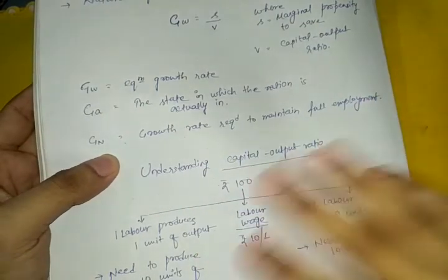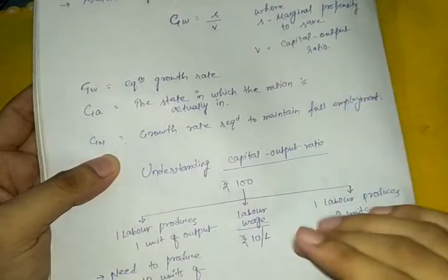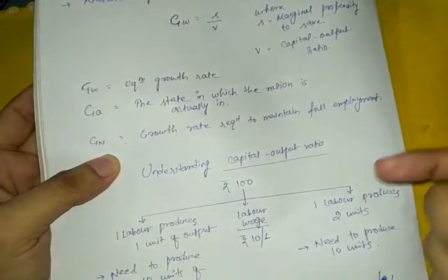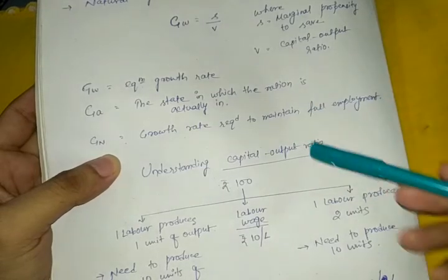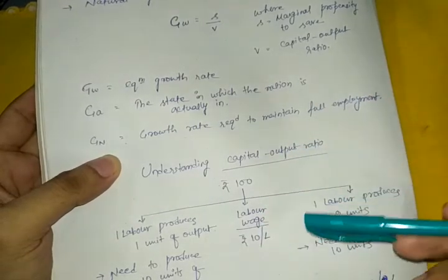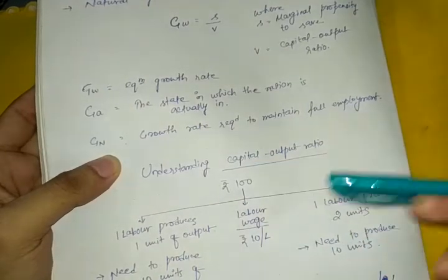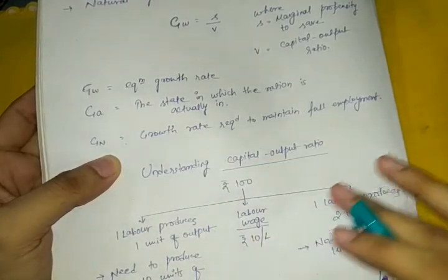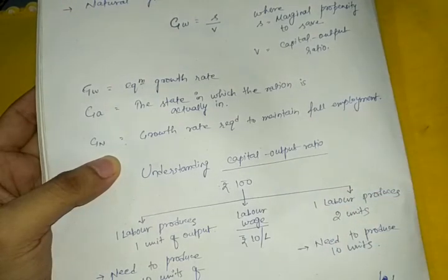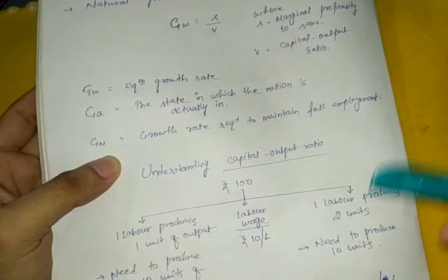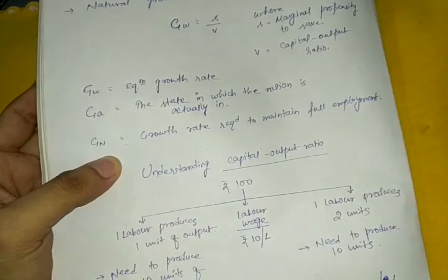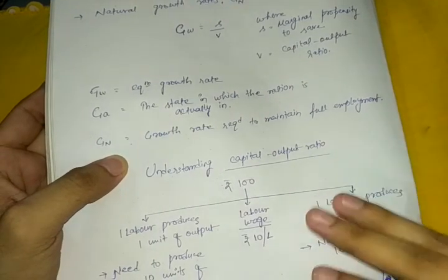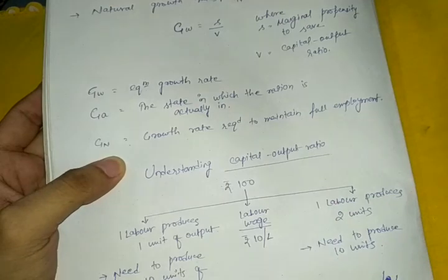These are the three growth rates in Harrod's model. In upcoming videos I'll discuss the short-run and long-run equilibrium of the Harrod model. Let me know in the comments if you don't understand anything. Also, follow Economics Made Easy on Facebook so you never miss notifications of upcoming or previous videos. Thank you so much for watching!